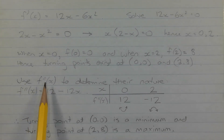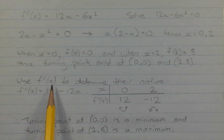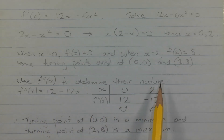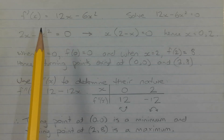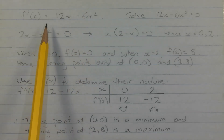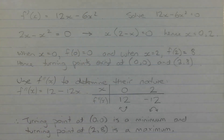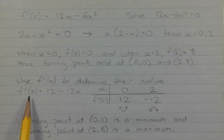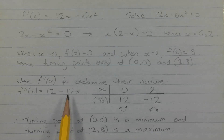Next we can use the second derivative f''(x) to determine the nature of the stationary points we just found. Differentiating f'(x) = 12x − 6x² again gives f''(x) = 12 − 12x.